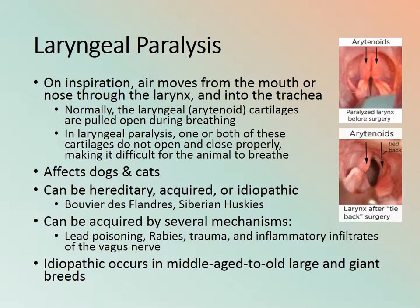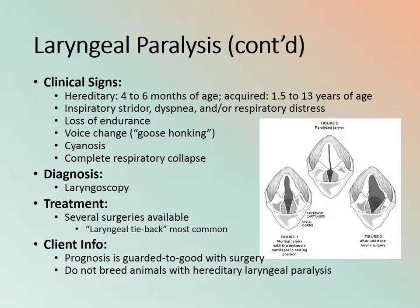Pictures show the larynx before and after surgery since surgical correction is an option. Clinical signs for hereditary cases appear around four to six months of age and include inspiratory stridor, dyspnea or respiratory distress, loss of endurance, voice change — a goose-honk type cough — cyanosis due to improper breathing, and complete respiratory collapse is also a possibility.